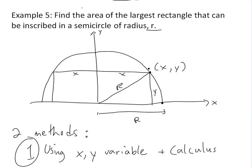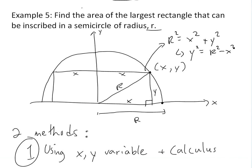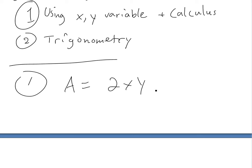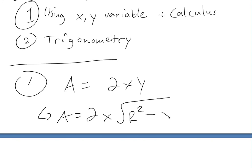Using Pythagoras here, r² = x² + y², since this is a right angle. Rearranging, y² = r² − x², so y = √(r² − x²). We take the positive root because y can't be negative in this context. When we plug in y, we get A = 2x√(r² − x²).